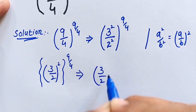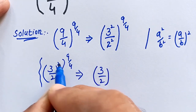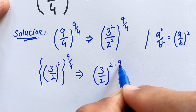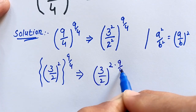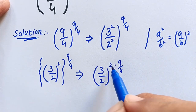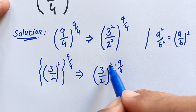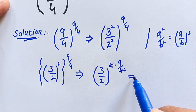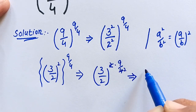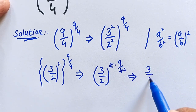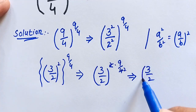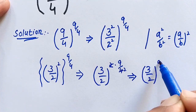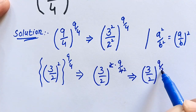So we have (3/2) to the power of 2 times 9 over 4. Now 2 times 9/4 = 18/4, and simplifying gives us (3/2) to the power of 9 over 2.